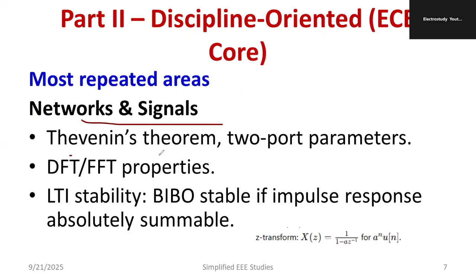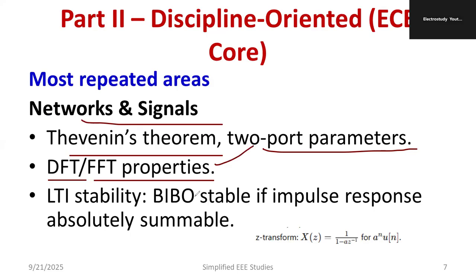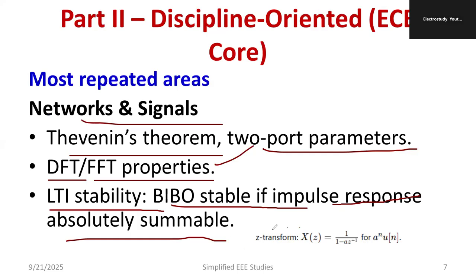For networks and signals, study Thevenin's theorem properly. Study two-port networks, DFT, and FFT properties. Linear time invariance and stability: bounded input, bounded output stable. A BIBO stable system has an absolutely summable impulse response. Study the formula of the Z-transform: X(z) = 1 / (1 - a·z⁻¹). Try to study these formulas.